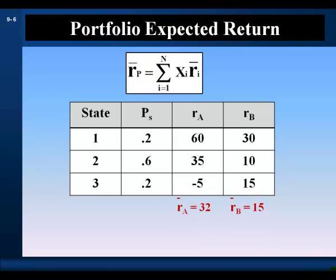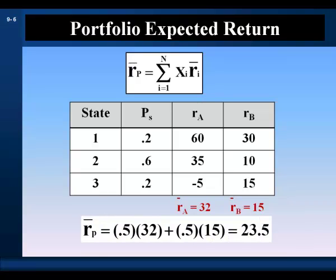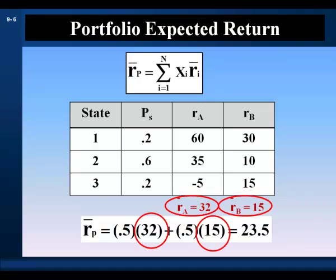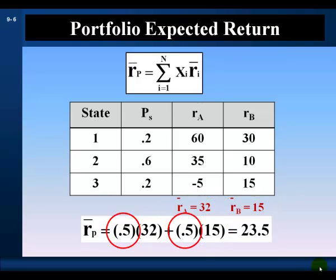From their probability distributions, we calculate the expected return for security A and security B. We weight the expected return of each security by the proportion of the portfolio invested in that security and sum across all securities. The expected return of the portfolio is 23.5%. An individual security brings its expected return to the expected return of a portfolio, in proportion to its investment in the portfolio — no more, no less.